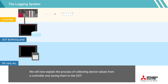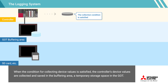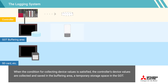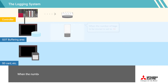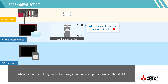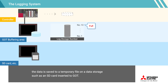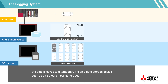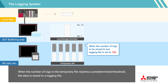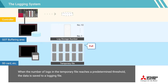We will now explain the process of collecting device values from a controller and saving them to the GOT. When the condition for collecting device values is satisfied, the controller's device values are collected and saved in the buffering area — a temporary storage space in the GOT. When the number of logs in the buffering area reaches a predetermined threshold, the data is saved to a temporary file on a data storage device such as an SD card inserted into the GOT.